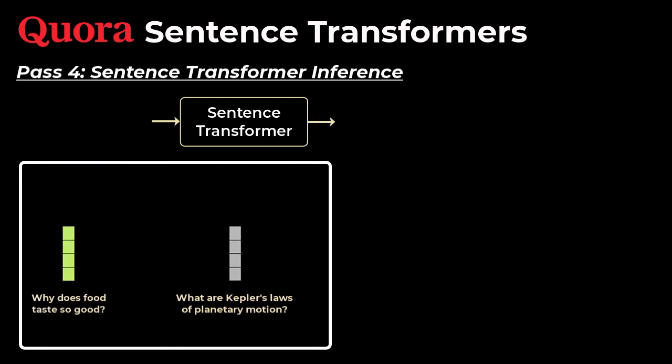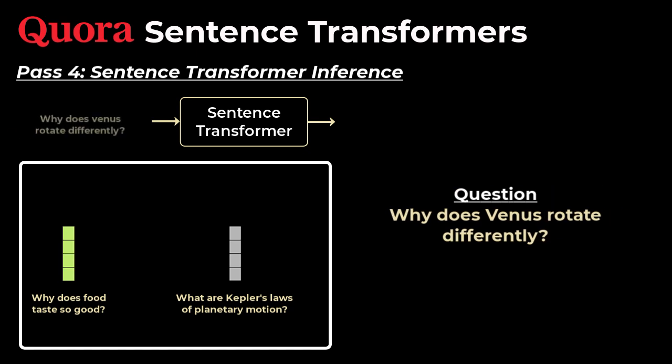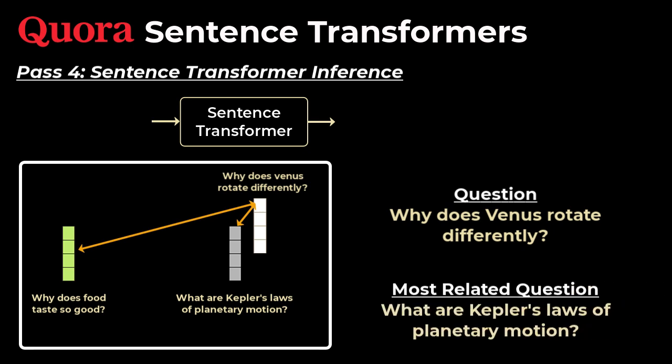Next, when a sentence comes in, we pass it into the sentence transformer to get the sentence representation or sentence embedding. Next, we determine the cosine similarity between this question and other candidate questions, and then we'll return the closest question list.